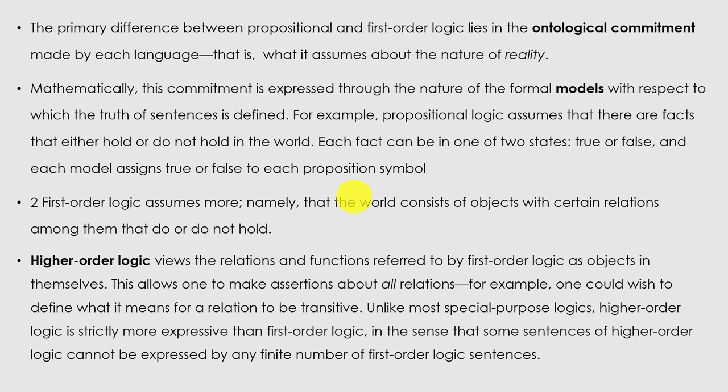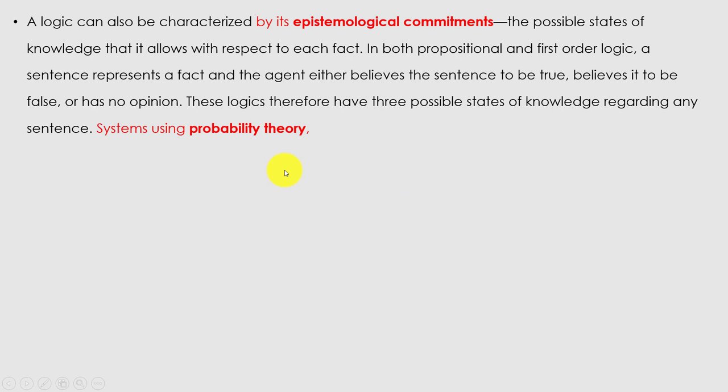Higher-order logic allows one to make assertions about all relations. For example, one could wish to define what it means for a relation to be transitive. Unlike most special-purpose logics, higher-order logic is strictly more expressive than first-order logic, in the sense that some sentences of higher-order logic cannot be expressed by any finite number of first-order logic sentences.